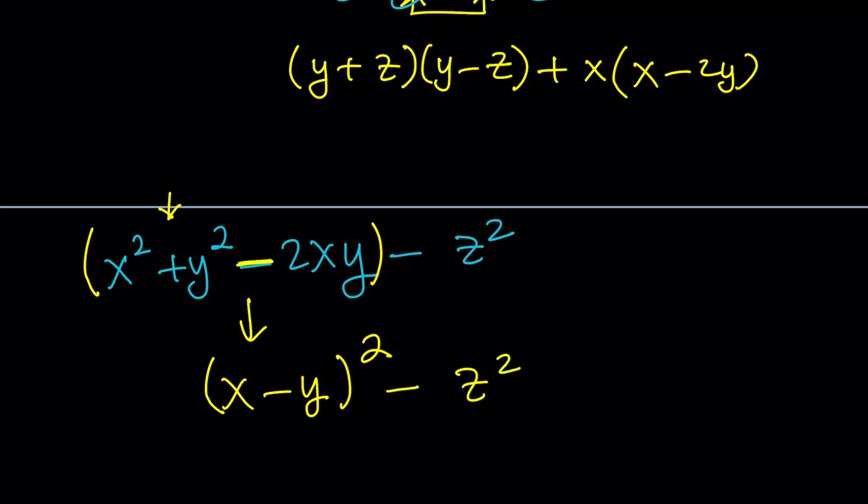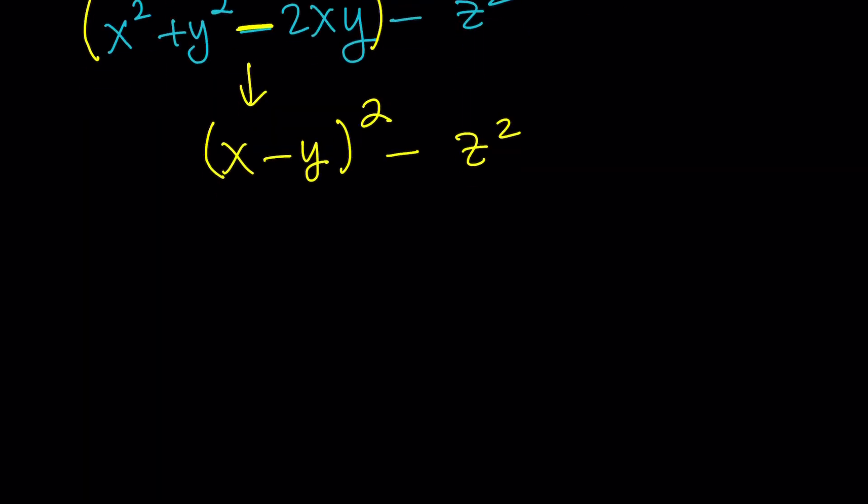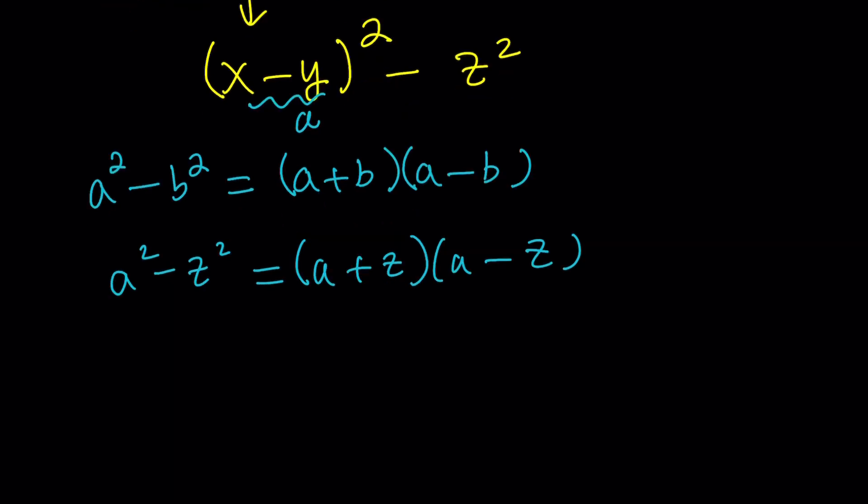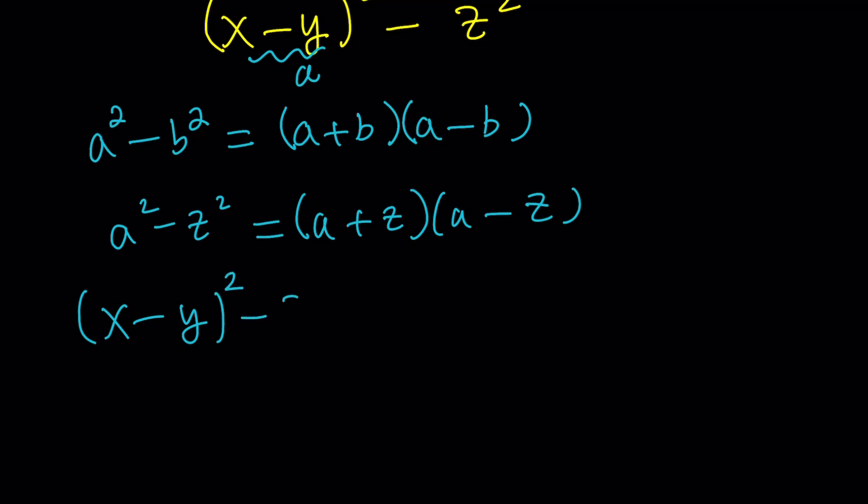And this is what we were trying to get. What is this called? Difference of two squares, right? And difference of two squares can actually be factored very easily. So we can do the following. Remember, a squared minus b squared can be written as a plus b multiplied by a minus b. And what is this called? Difference of two squares. So we can apply the same formula here. If we do that, this is going to be our a. And we could go with a squared minus z squared, which is a plus z multiplied by a minus z. So in other words, x minus y squared minus z squared can be written as x minus y plus z multiplied by x minus y minus z. And that will be our expression factored in the simplest form.